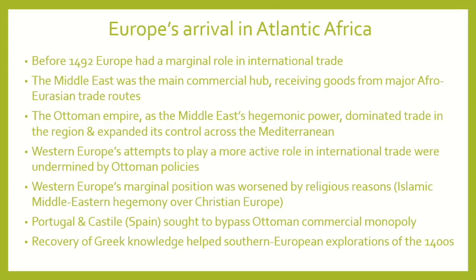One of the things that helped them was the recovery of knowledge from previous eras — from the classical age. The Greeks had accumulated a lot of geographical knowledge, acquired from the Egyptians, the Persians, and so on. It is now that they would rely on this type of knowledge to find alternative routes. This map of the Ottoman Empire shows the large areas controlled in the Middle East, Southeastern Europe, and North Africa — and from there you can see how they prevented Western European people from benefiting from commercial exchanges in this part of the world.